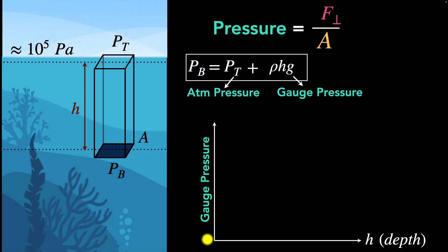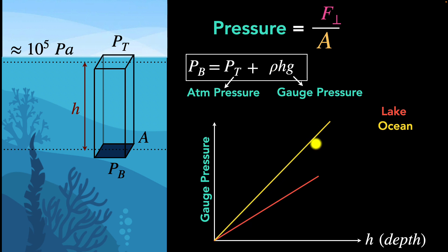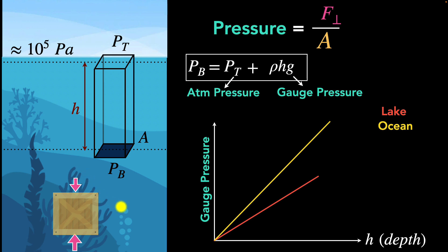Finally, suppose we draw a graph of gauge pressure versus depth. For a lake, right at the surface the gauge pressure is zero — the pressure equals atmospheric pressure. Then gauge pressure is proportional to height, so we get a straight line showing pressure increasing linearly with depth. For the ocean, the water has higher density due to salt, so the line is steeper — a slightly higher slope. And if you submerge a cube inside water, the pressure on the bottom is slightly higher than on the top, which means the force on the bottom is greater than on the top, producing a net upward force — called the buoyant force — which is responsible for making certain things float. That's something we'll talk about in a future video.